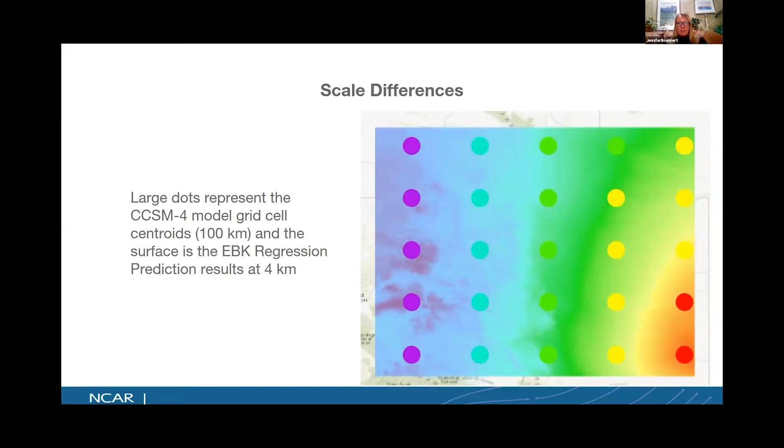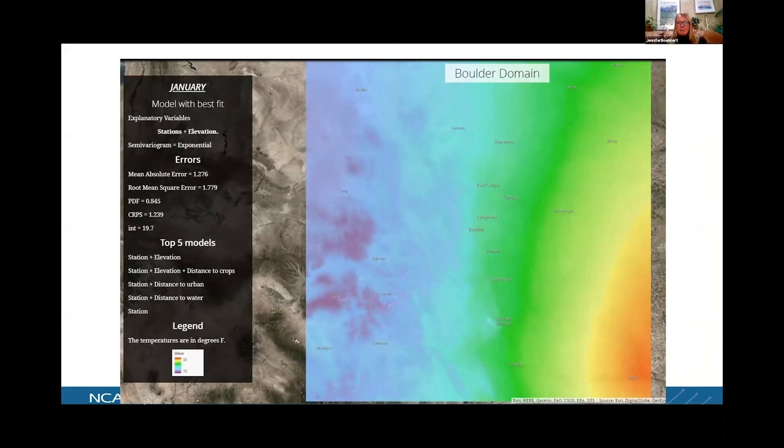Here's an example of the Boulder domain. Within Boulder, the middle of that is the front range area of Boulder. So we've got Boulder, Denver, Fort Collins. Towards the west is our high-peaked mountain areas and towards the east is our plains. When we ran this particular model for January, we found that the best fit model was using stations and elevation. When we computed some statistics based on our control dataset, we found that our mean absolute error was about 1.3 degrees and our root mean square error is about 1.8 degrees. Taking a look at some of the other models that did very well, they all included station information, but then some of them also used distance to crops, distance to urban, distance to water.